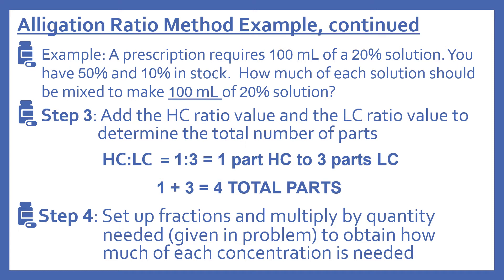In step three, we're going to add the HC ratio value and the LC ratio value to determine the total number of parts. Our ratio is 1 to 3 — one part of high concentration to three parts of low concentration. We'll add 1 plus 3, which gives us a total of 4 parts. Now in step four, we're going to set up a fraction and multiply by the quantity needed, which is 100 milliliters in our problem — that's how much of the final solution we need.